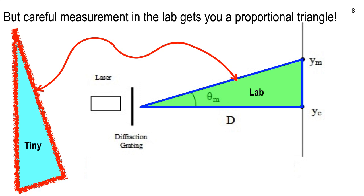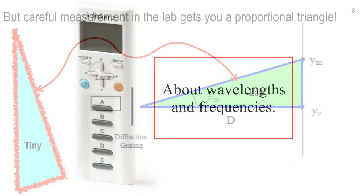You can do it in the lab — everybody in here could do it. It's easy to do with a red laser pointer since it has just one wavelength. You measure it on the wall and on the lab table, and you're measuring nanometers. It's really cool. That's how that works.